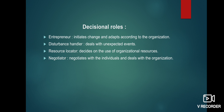The second decisional role is disturbance handler. The disturbance handler deals with unexpected events and contingent situations. There will always be situations where unexpected things happen in the organization, so it is very important to have someone who can handle such disturbances effectively.